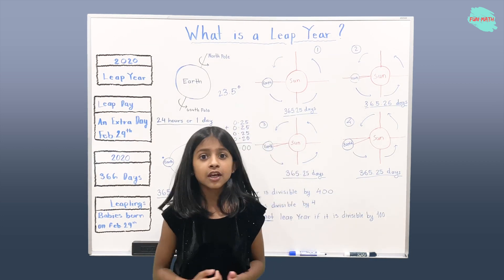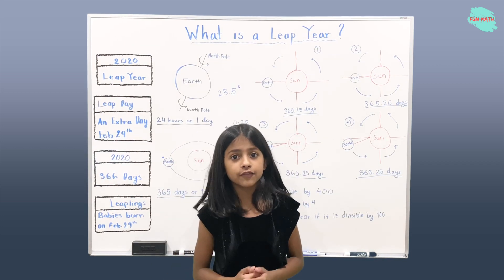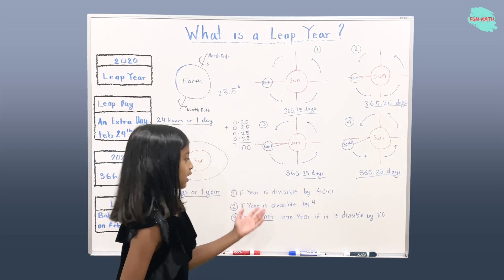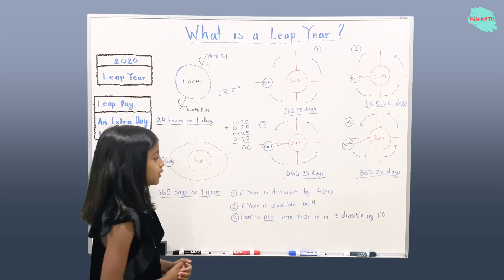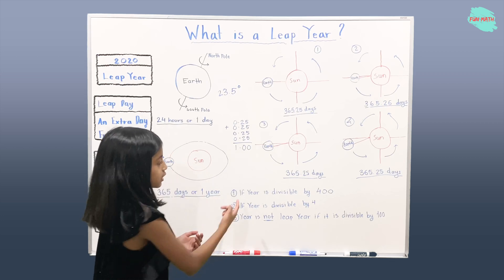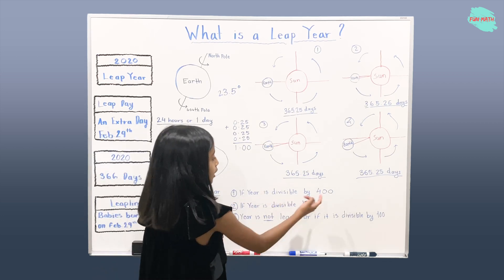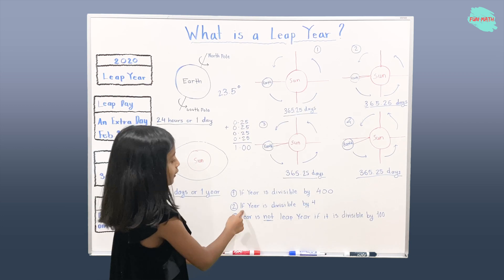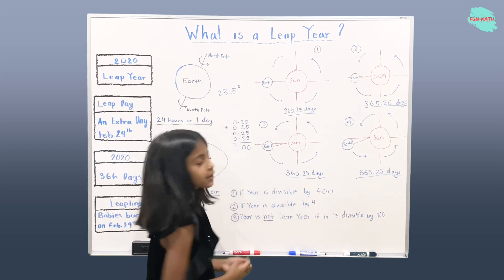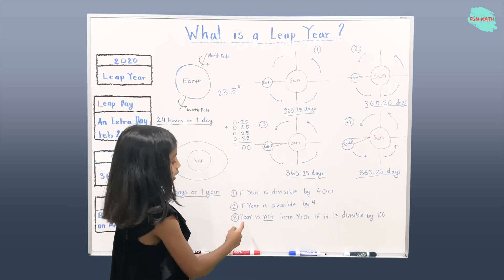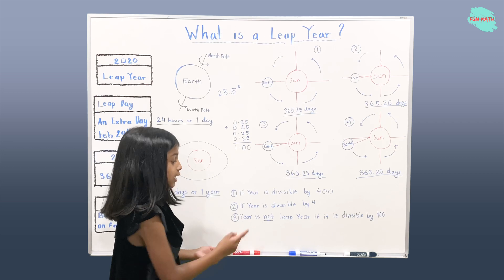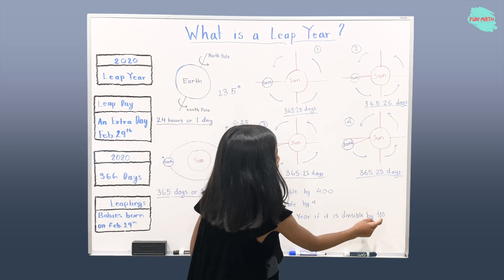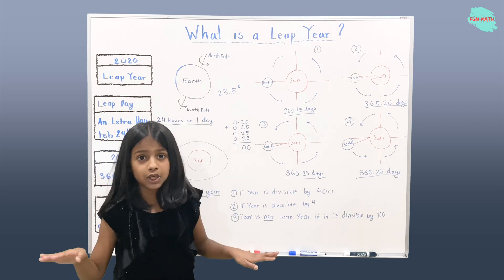There are a few rules to check if the year is a leap year or not. If the year is divisible by 400, then it is a leap year. If the year is divisible by 4, then it is a leap year. But if the year is divisible by 100, that means it's not a leap year.